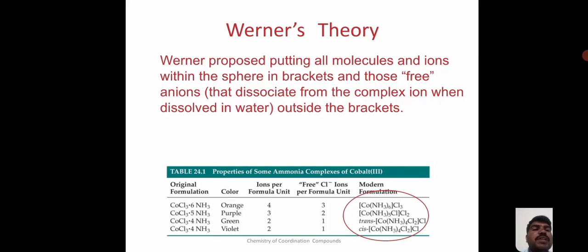In Werner theory, Werner proposed putting all the molecules and ions within the sphere in brackets and those free anions outside the brackets. Here, in the table, cobalt with 6 ammonium and chlorine atom is outside of the sphere, meaning the chlorine atom is outside of the sphere.